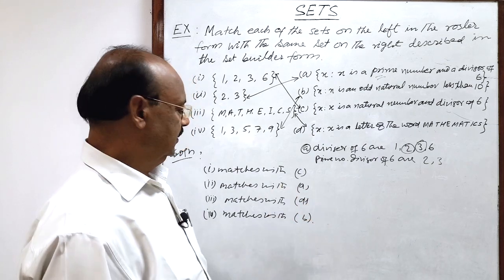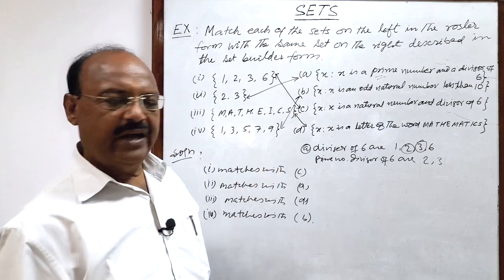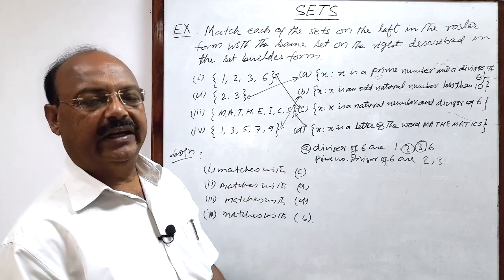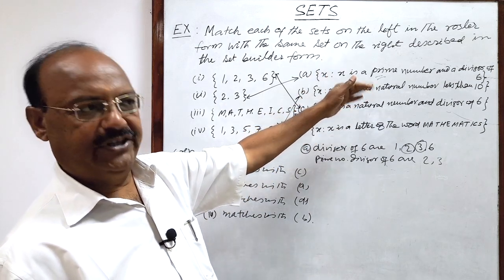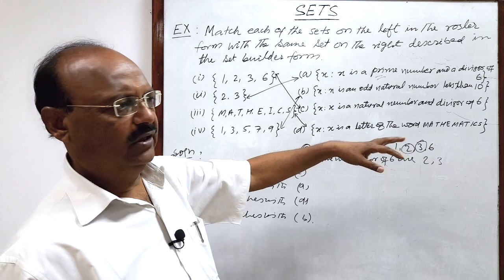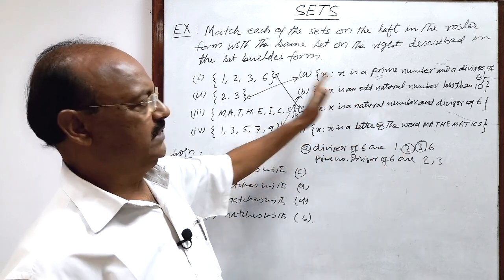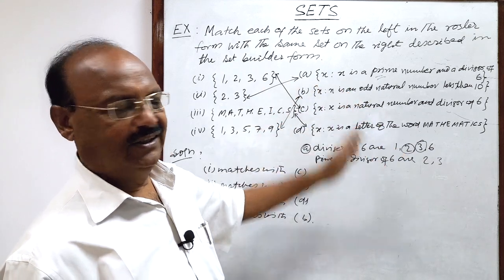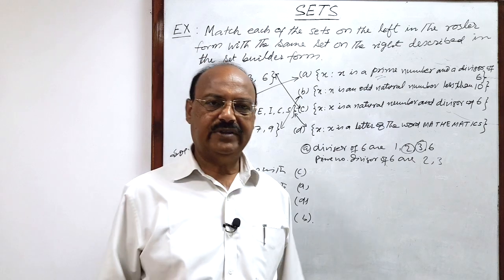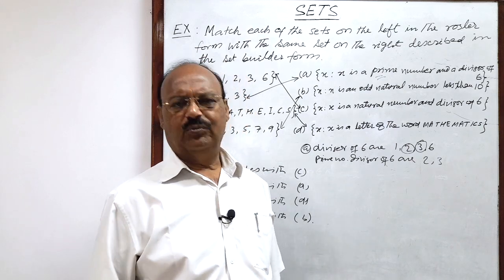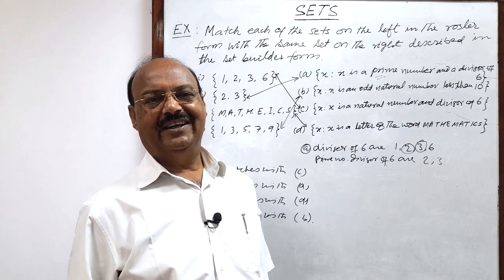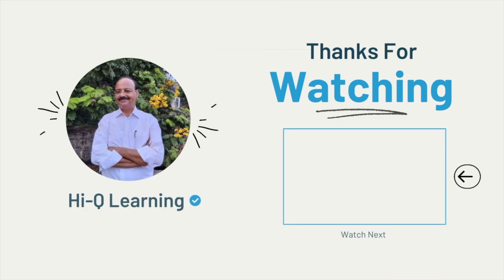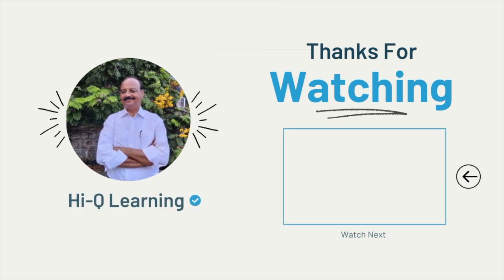So this is the answer. So it is very simple just we have to understand how we can convert the sets from set builder form to tabular form or roster form then it is always easy to match the given sets. So hope you have understood and enjoyed a lot. We will see some more questions in other videos. So keep watching these videos and enjoy learning mathematics. Thank you very much.